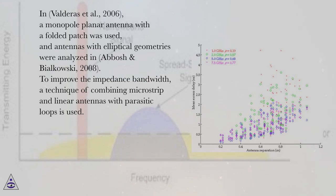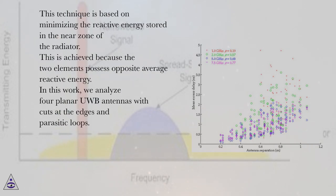To improve the impedance bandwidth, a technique of combining microstrip and linear antennas with parasitic loops is used. This technique is based on minimizing the reactive energy stored in the near zone of the radiator. This is achieved because the two elements possess opposite average reactive energy.